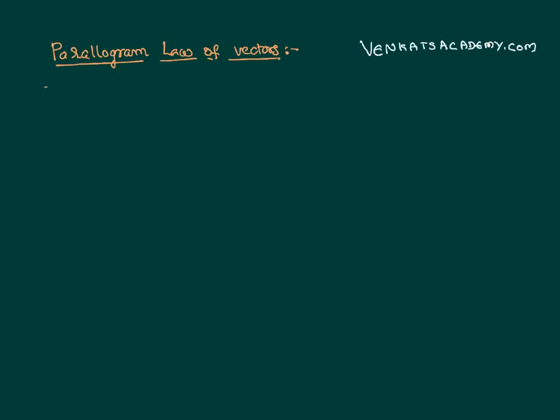So what does this parallelogram law of vectors tell you? It's very simple to define. It tells you that if two vectors are represented as two adjacent sides of a parallelogram starting from the same point, then the resultant of the two vectors is the diagonal of the parallelogram passing through the same common point.